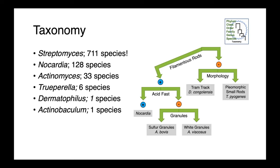Perhaps the easiest way to separate them is just based on their morphology. Filamentous bacteria are going to be either Nocardia or Actinomyces. If they're not filamentous and have that tram-track appearance, we're likely talking about Dermatophilus congolensis. If we have pleomorphic small rods, these are our Trueperella pyogenes. Between the filamentous rods, we can separate them based on their ability to be stained using the acid-fast stain — Nocardias are acid-fast positive, while Actinomyces are acid-fast negative. Actinomyces species of clinical interest can be further subdivided based on the presence of granules — sulfur granules with A. bovis and white granules with A. viscosus.